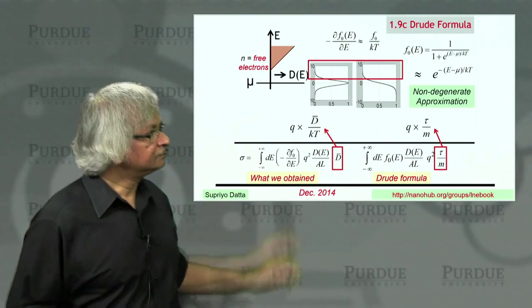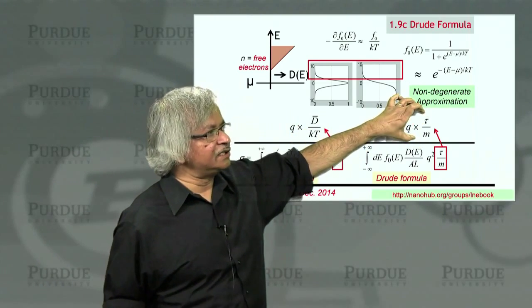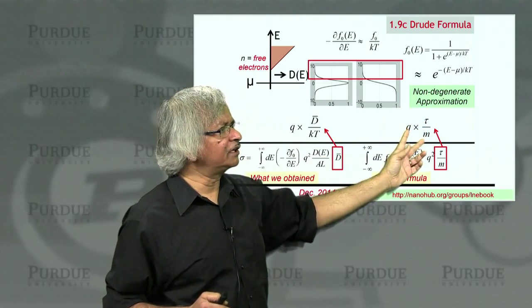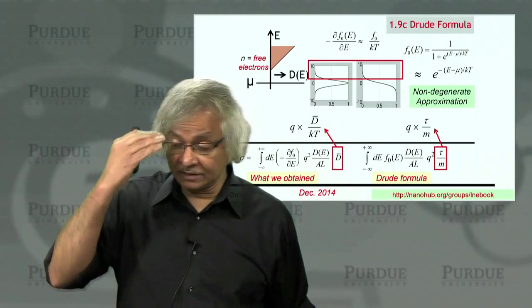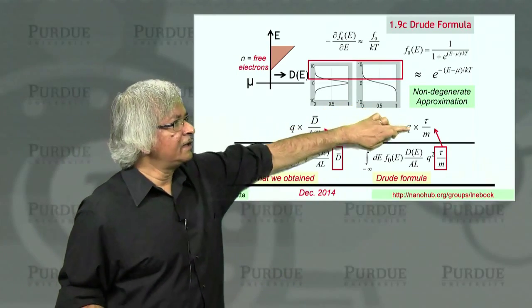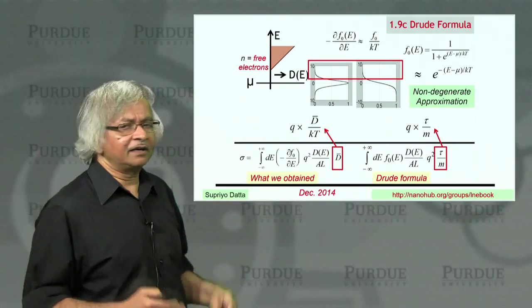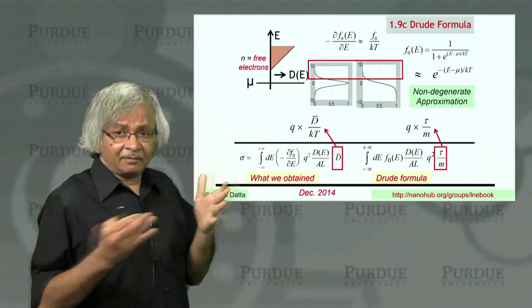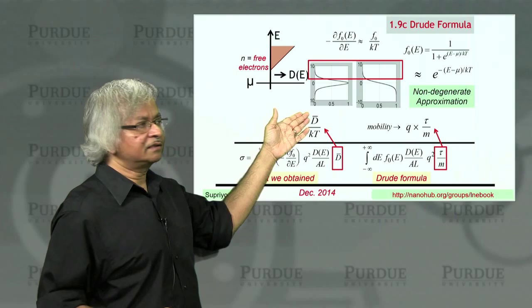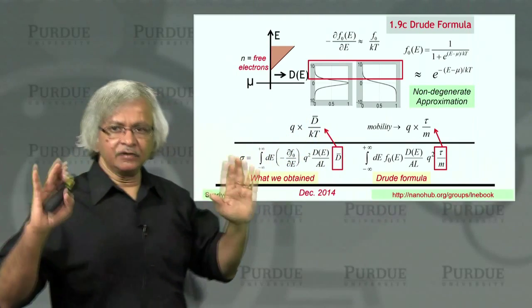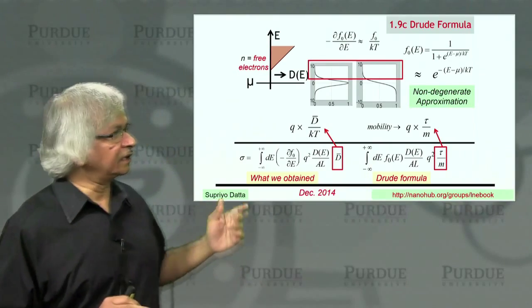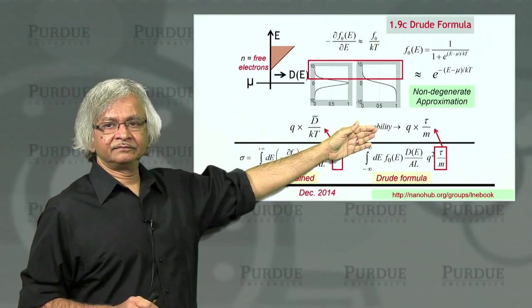And then you might recognize this q tau over m depending on your background. I think I brought this up once in an earlier lecture. This is the quantity that's often called the mobility. In fact, this is the quantity that people carry in their head. Any time you have a new material, they ask, well, what's the mobility? That's mobility. Whereas here, what you have is the diffusion coefficient. But again, if you have taken a course on semiconductors or in some other context, you might have heard of this Einstein relation, which says that diffusion coefficient times q over kT is mobility. And that's again true only for non-degenerate conductors. Not true in general. In general, there's a correction factor. But for non-degenerate conductors, that and that are the same thing.